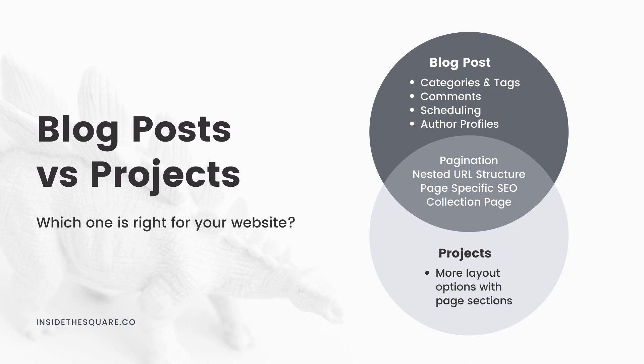Hopefully this Venn diagram on the screen helps explain that a little bit more so you can decide which one is right for your website. If you want a lot more flexibility with the layout, go with projects. But if you have a lot of content and want to organize it by categories or tags, manage comments, or you create consistent content and want to schedule it in advance, you need to create a blog instead of a project.